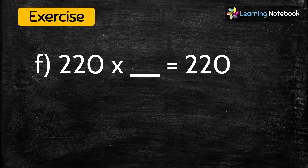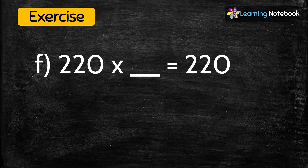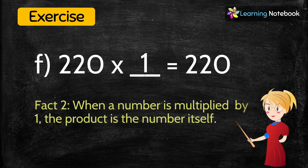The next question is: 220 multiplied by blank equals 220. The answer is 1, because when a number is multiplied by 1, the product is the number itself.